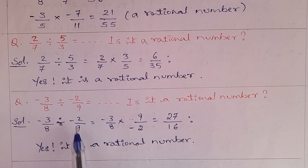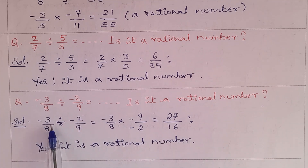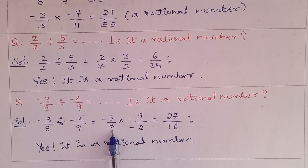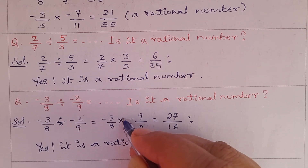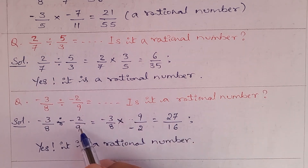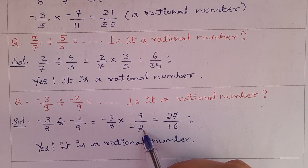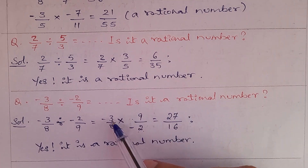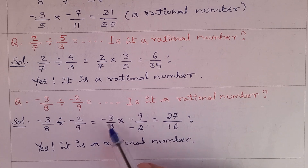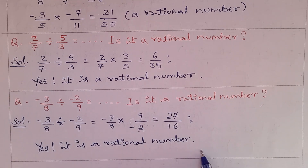Next: (−3/8) ÷ (−2/9). Keep −3/8 and multiply by the reciprocal of (−2/9), which is (−9/2). Minus times minus cancels to plus. So 3 × 9 = 27 and 8 × 2 = 16. The answer is 27/16, which is a rational number.